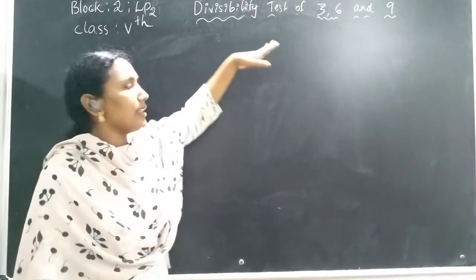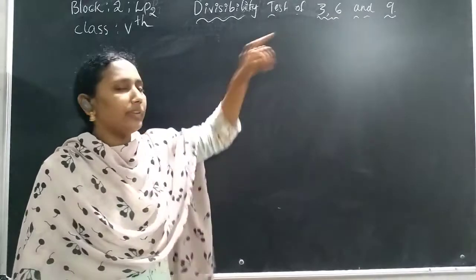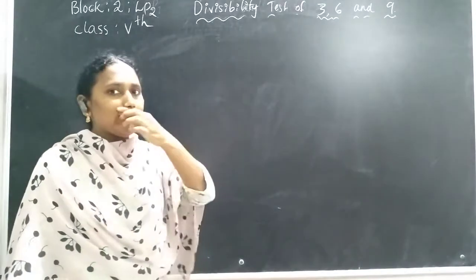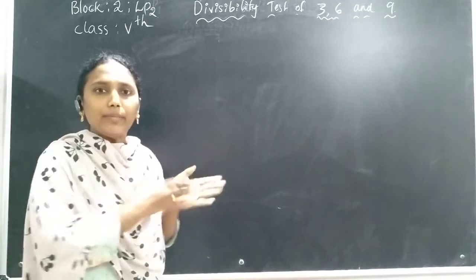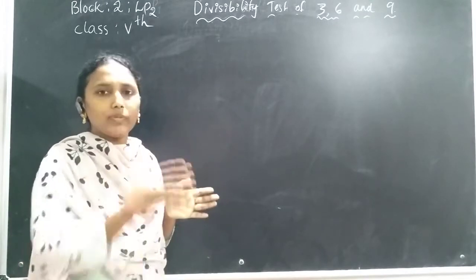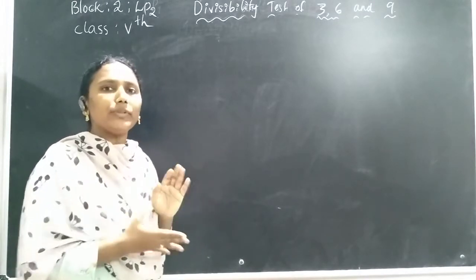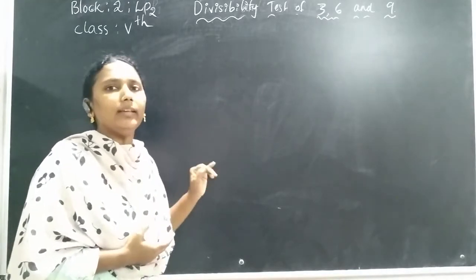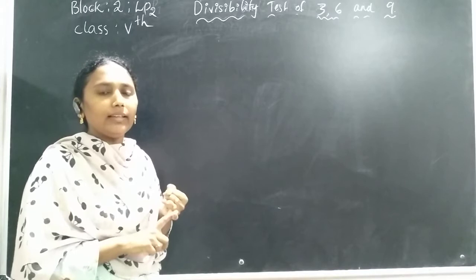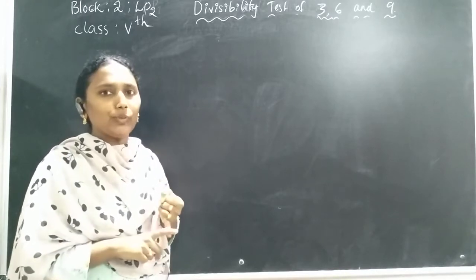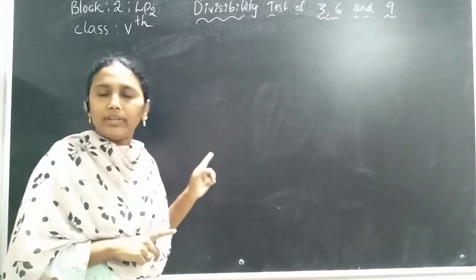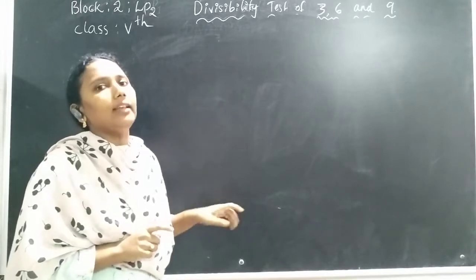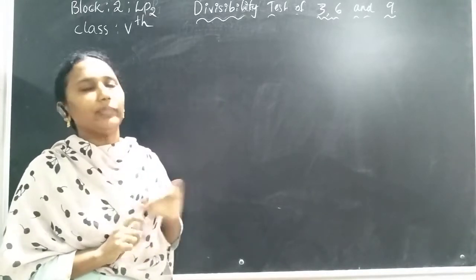We have learned the divisibility tests of 3 and 6. Now we will go to the number 9. A number is divisible by 9 when the sum of its digits is in the table of 9. When we add the given digits, that sum should be in the 9 times table. Then that number is divisible by 9.